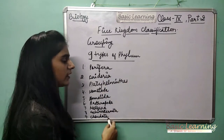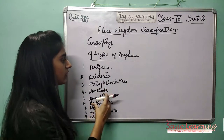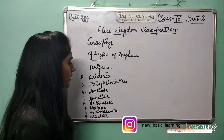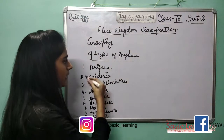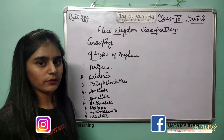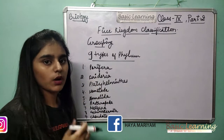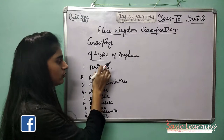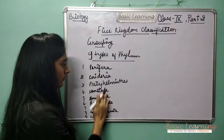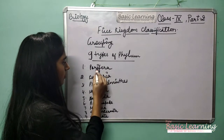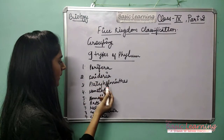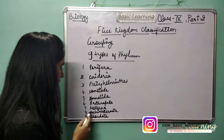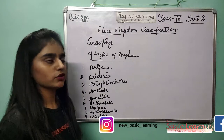You have to learn all these names. I understand it is difficult but they are not that difficult to learn. It is important in the exam. You have to learn all nine phylum names in order — Porifera first, then Cnidaria, Platyhelminthes, Nematoda, Annelida, Arthropoda, Mollusca, Echinodermata, and Chordata ninth. You have to number every name in serial order.